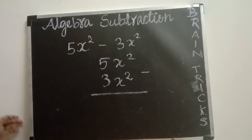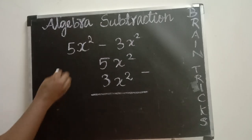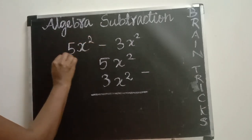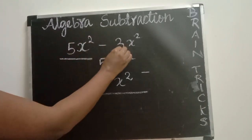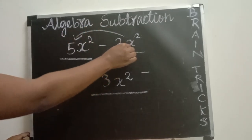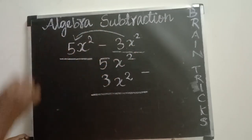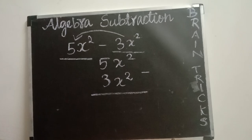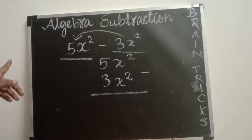First, you have to check the variable. We have 5x power 2 — this is one term — and 3x power 2 — this is one term. You are going to subtract this term from this one, so first you have to check the variables in both terms.